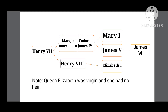Later on, Mary the First was killed by Elizabeth the First due to some reasons. But King James the Fifth later on married and gave birth to a child whose name was James the Sixth.